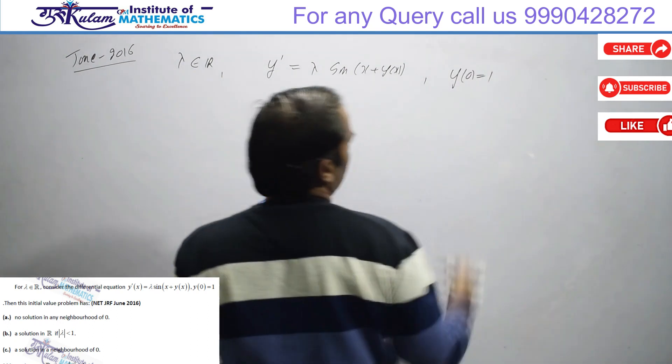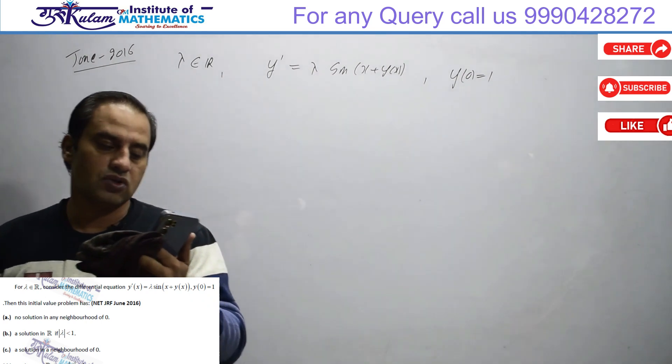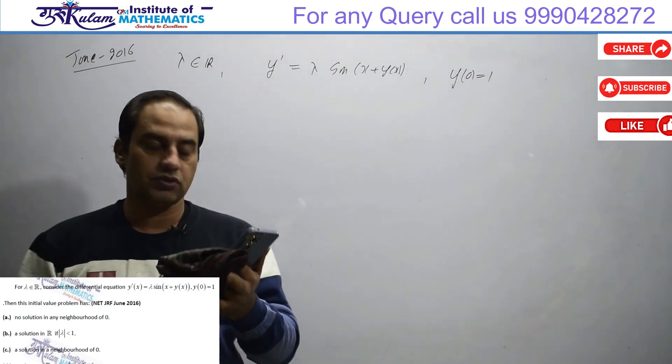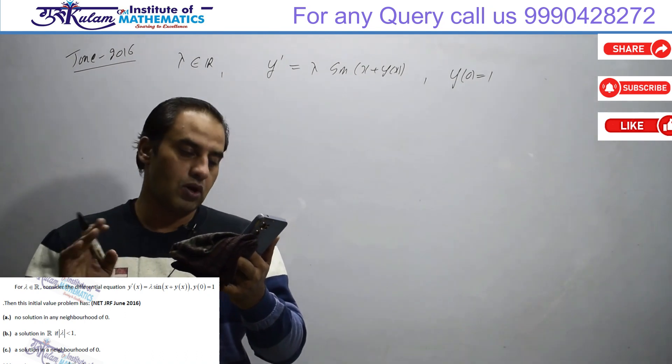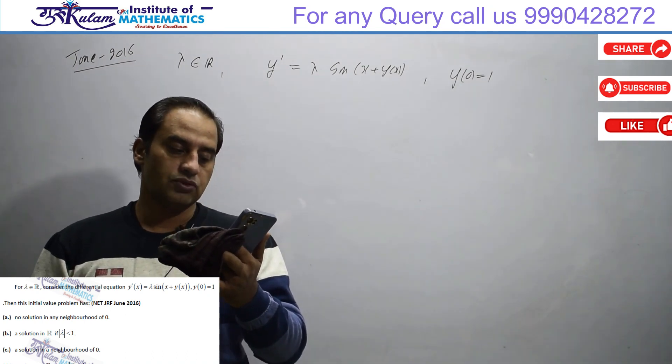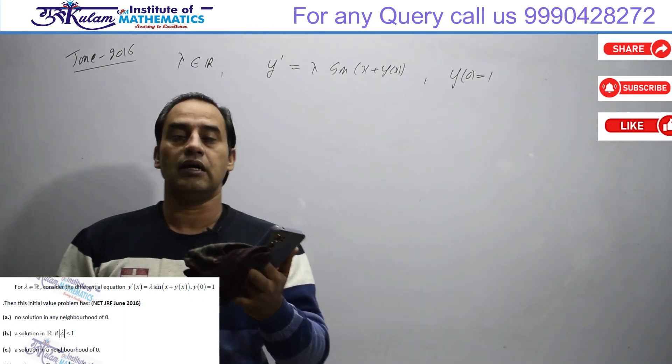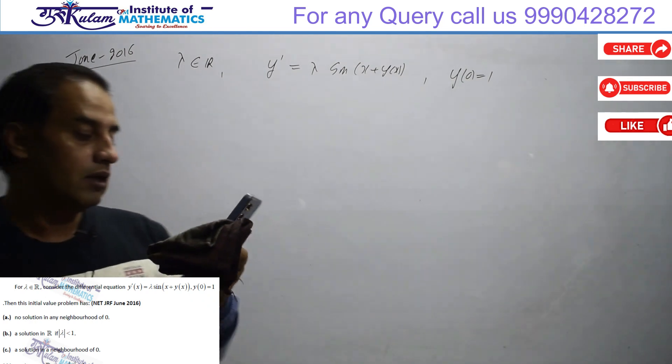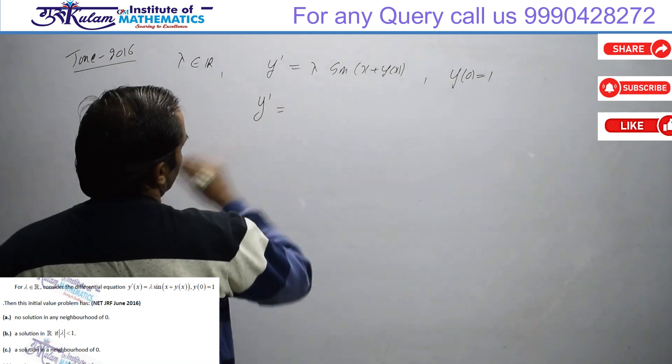And the options say: this equation has no solution in any neighborhood of 0, has a solution in R if |lambda| less than 1, a solution in a neighborhood of 0, and a solution in R only if |lambda| greater than 1. Let me discuss this.